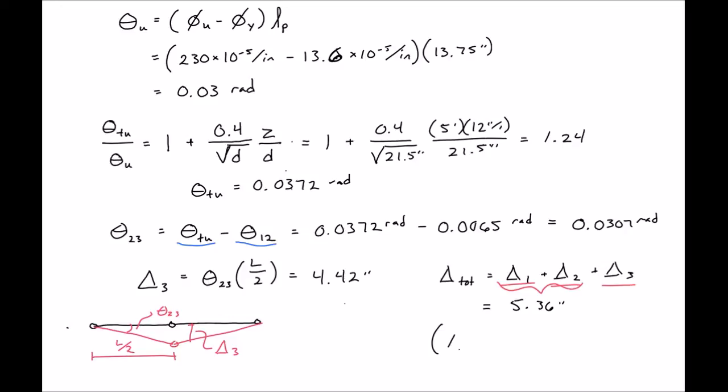We can compare this to our total that we found using ACI approach which was 1.33 inches. You can see that when we assume another approach which takes into account more of the ductility that we can get from our reinforced concrete section, we can get a much higher deformation.